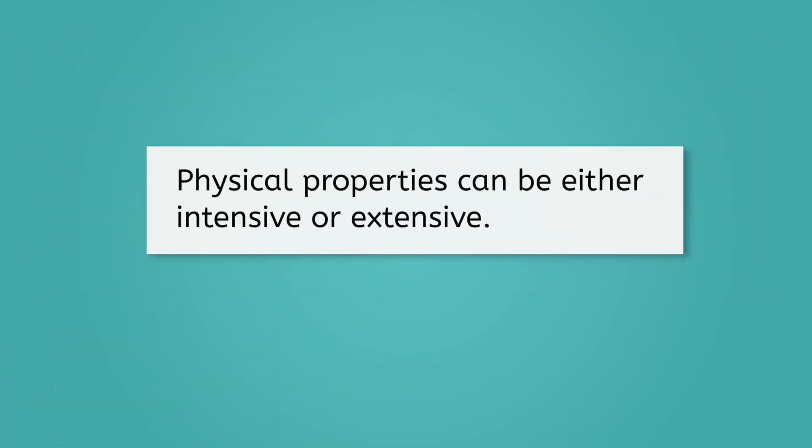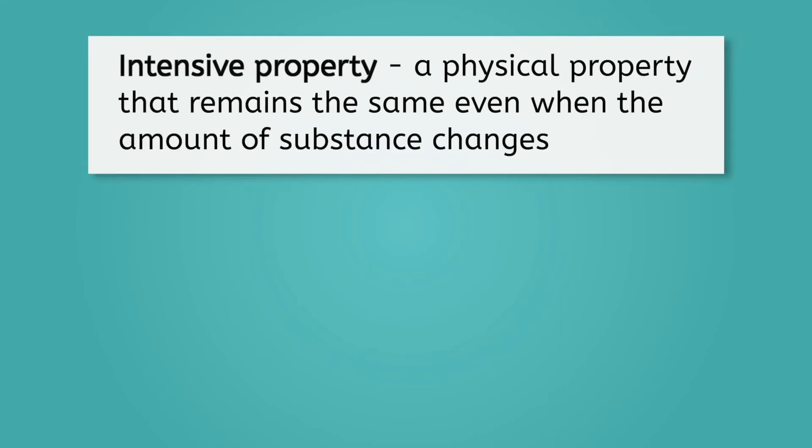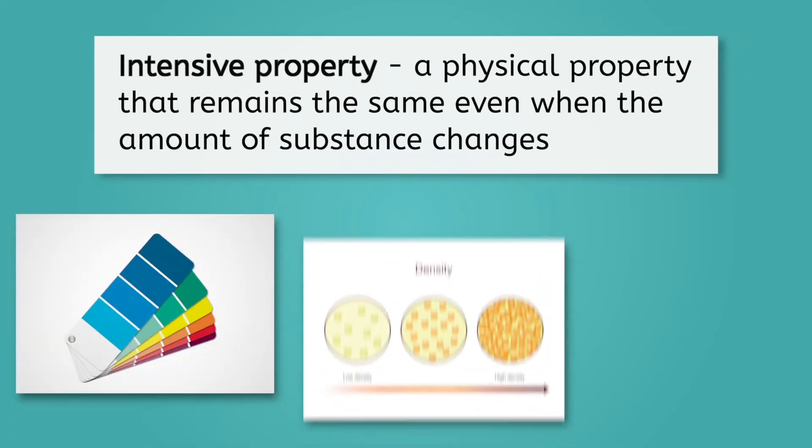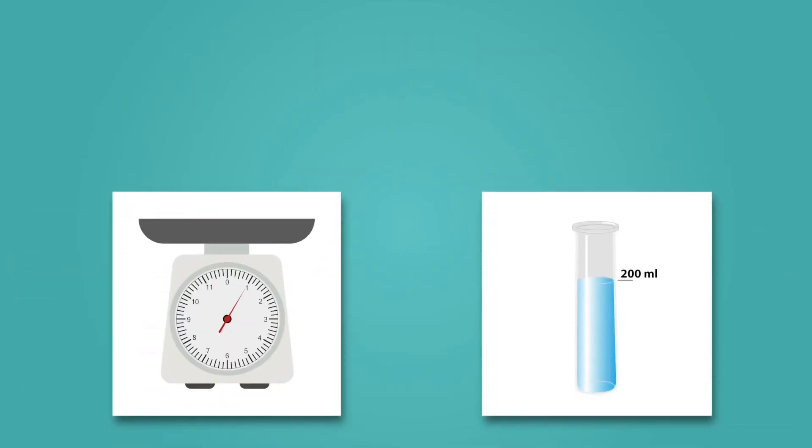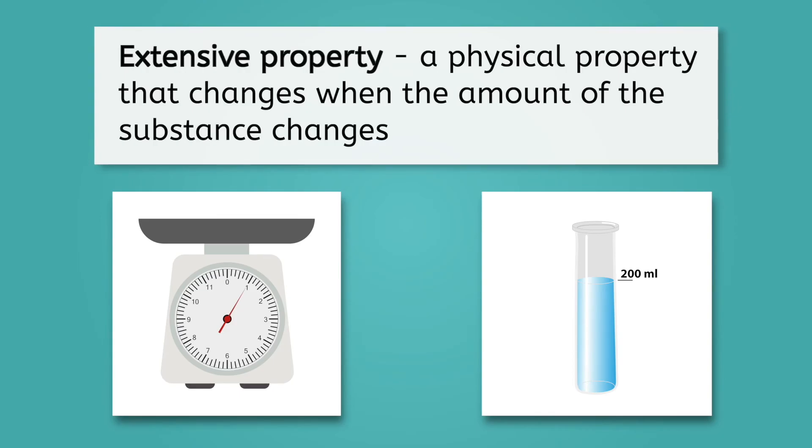Color is a specific type of physical property called an intensive property, while volume is an extensive property. All physical properties are either intensive or extensive properties. Intensive properties are properties such as color, density, and freezing point. These are all properties that remain the same no matter how much of the substance is present. On the other hand, mass and volume are examples of extensive properties. These are properties that depend on the amount of the substance and will change accordingly.